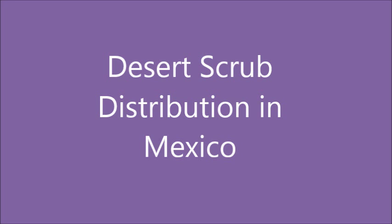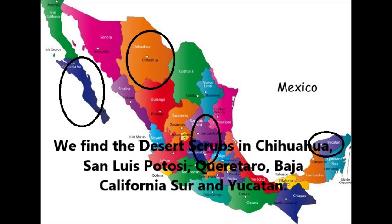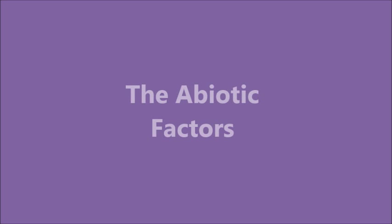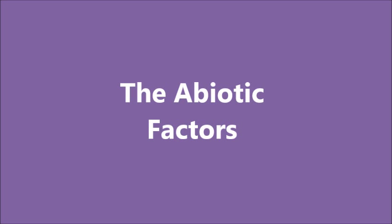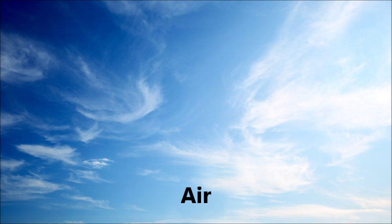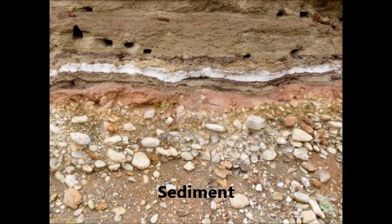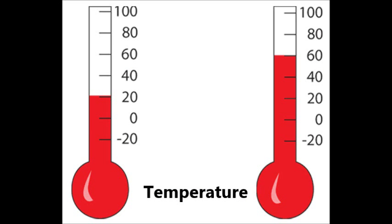Desert Scrub Distribution in Mexico. We find the Desert Scrubs in Chihuahua, San Luis Potosí, Querétaro, Baja California Sur, and Yucatan. The Abiotic Factors: air, sediment, and temperature.